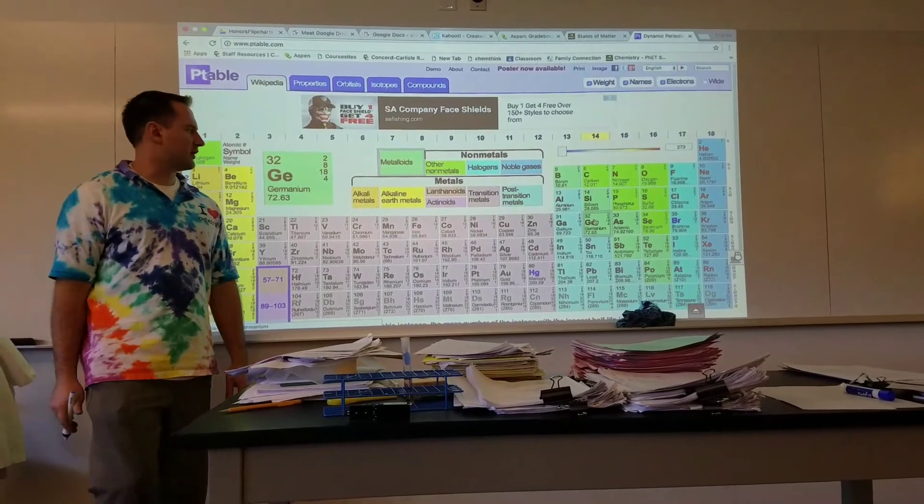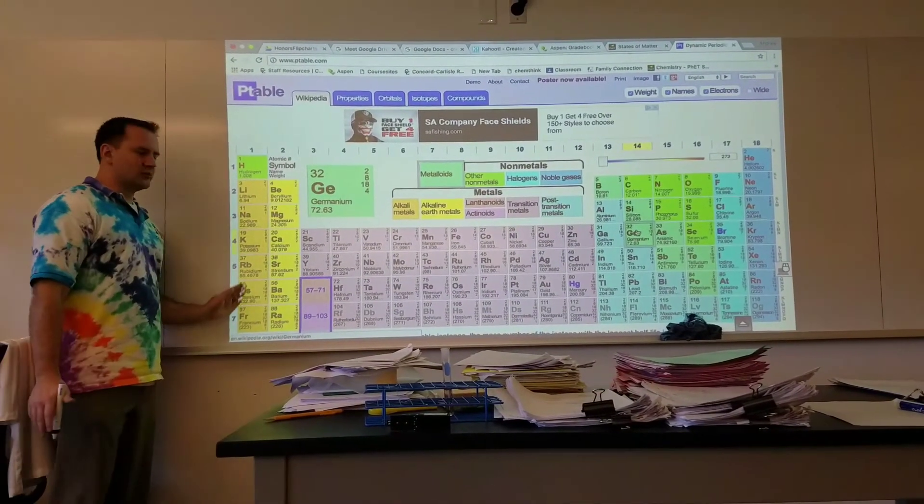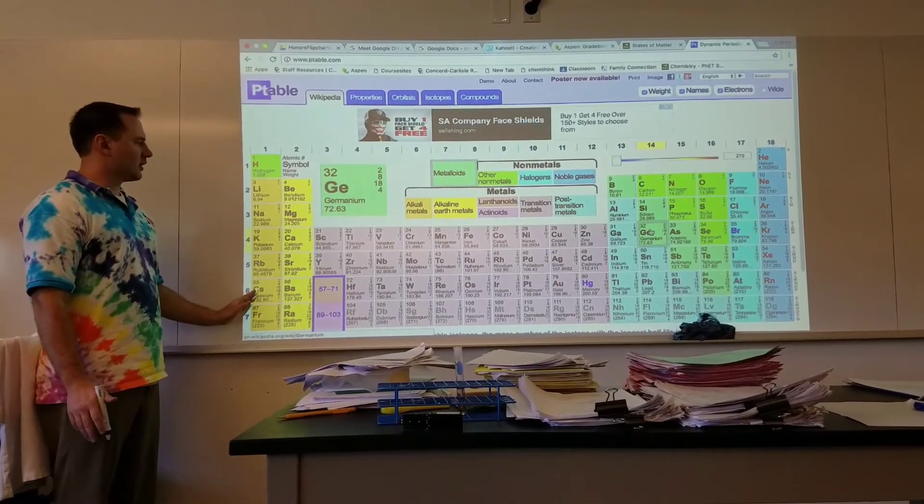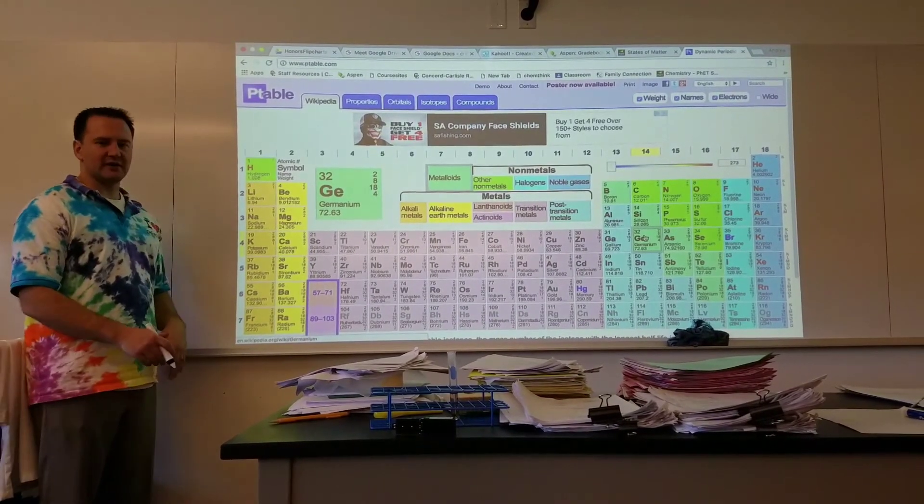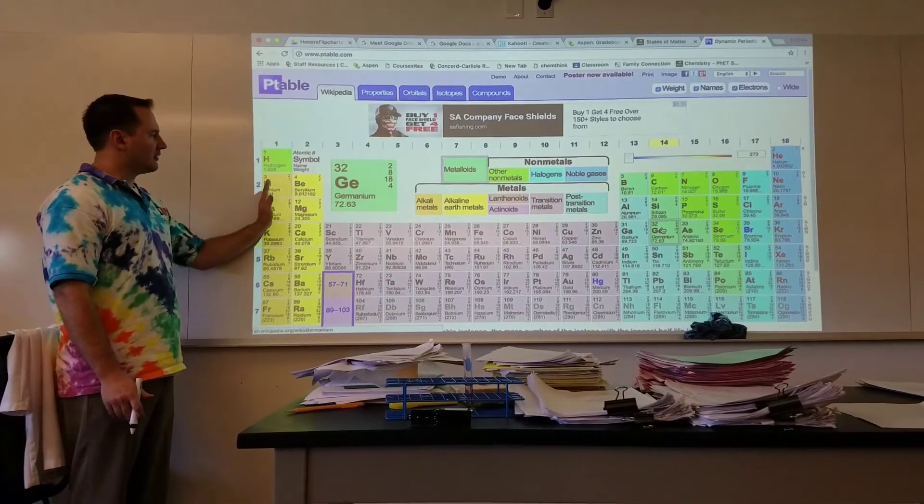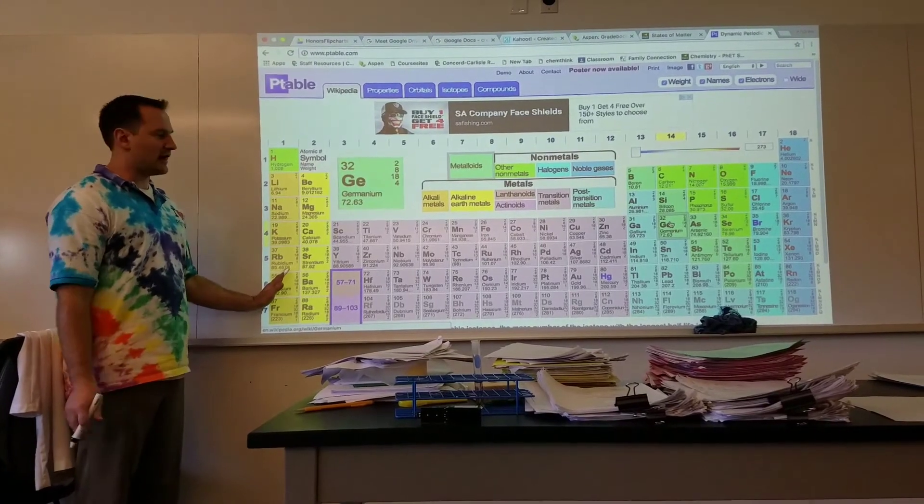Now we're going to look at the different types of elements that we have. The first group, or family, which we call the alkali metals, consists of lithium, sodium, potassium, etc. These all form positive 1 ions, and they're super reactive metals.